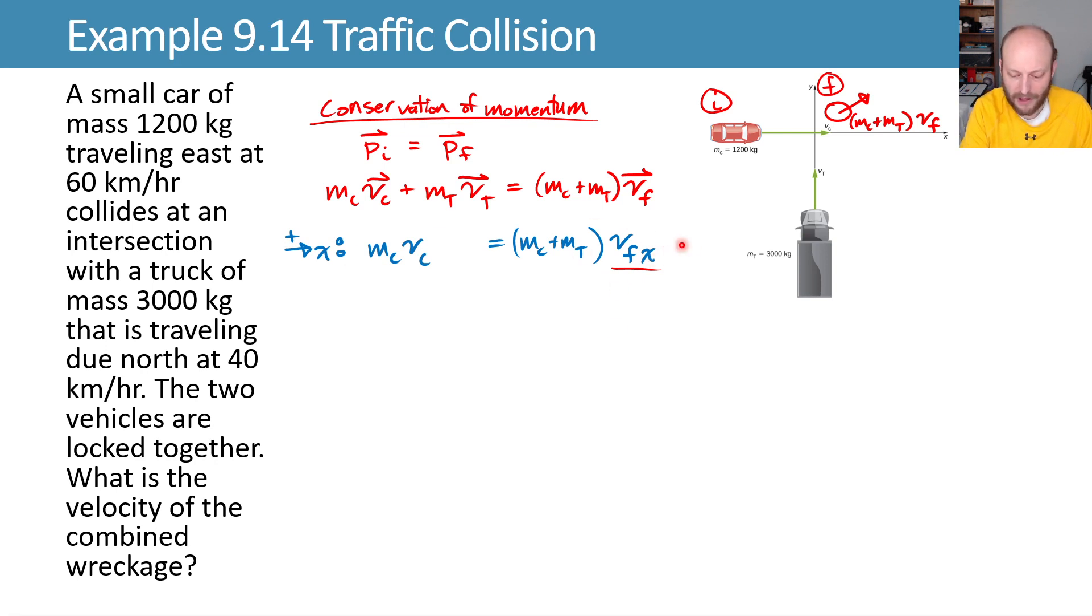Here we have one equation. We can solve that for one unknown. And we get our final velocity, once we divide both sides by this combined mass, of mc vc over the combination of mc plus mt. When you plug in your values, you get 4.76 meters per second. So that's our final x velocity.